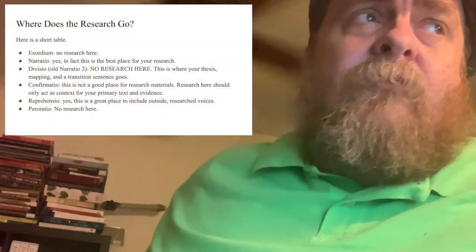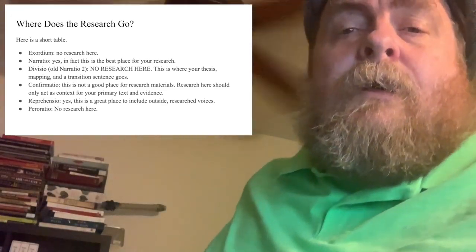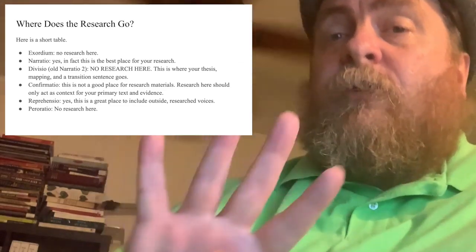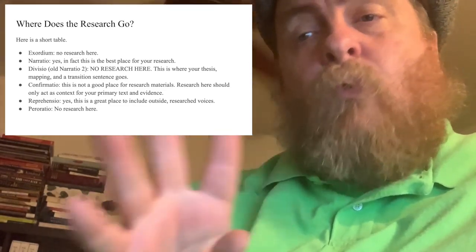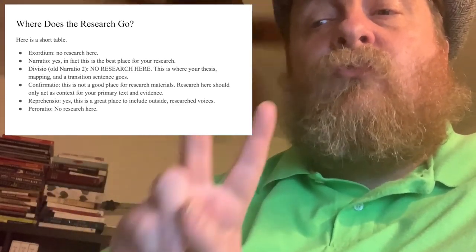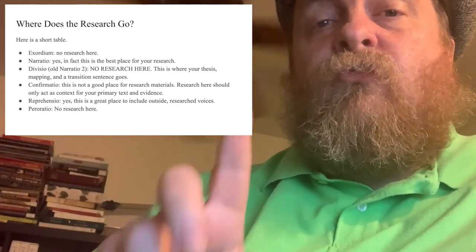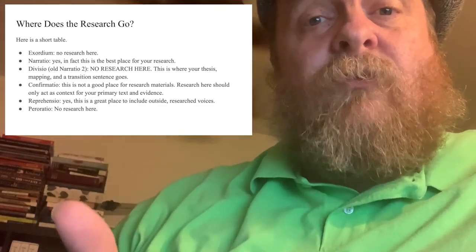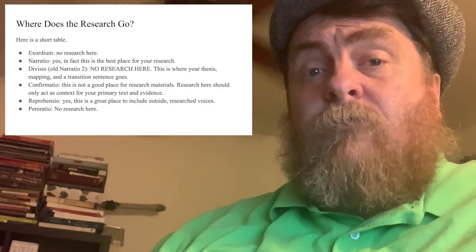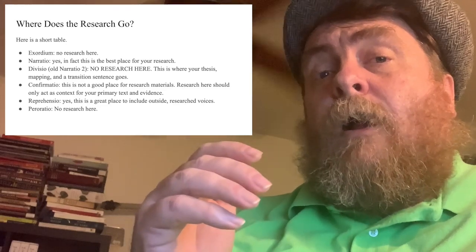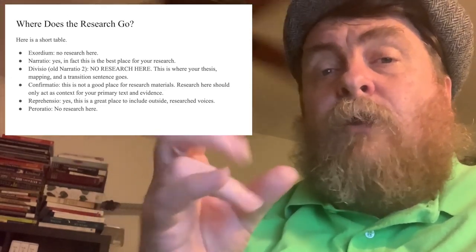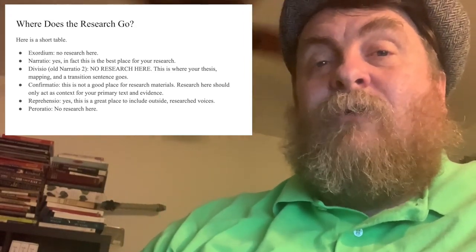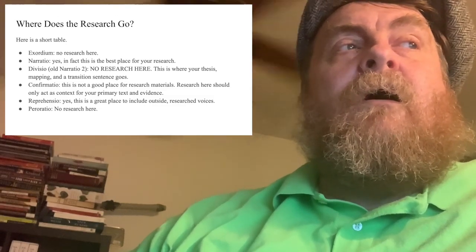So where does the research go? This table is designed to show you where the research goes. In the exordium, no research at all — you only have three to four sentences that go there. The two things you do is show your subject matter. If you're going to do Aurora, you're supposed to focus on one of Aurora's philosophical points: libertarianism, meritocracy, or egalitarianism. No research there.